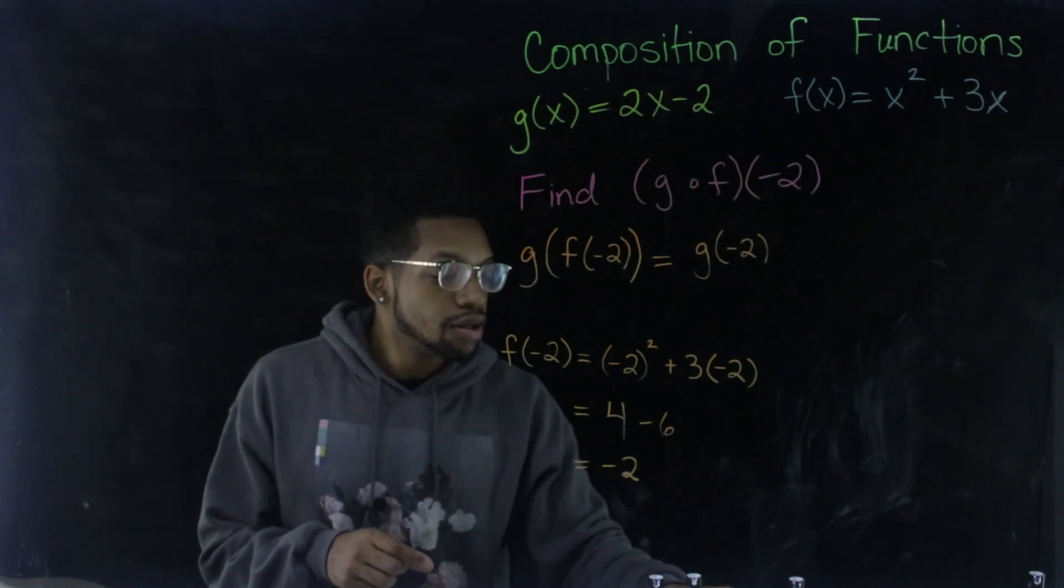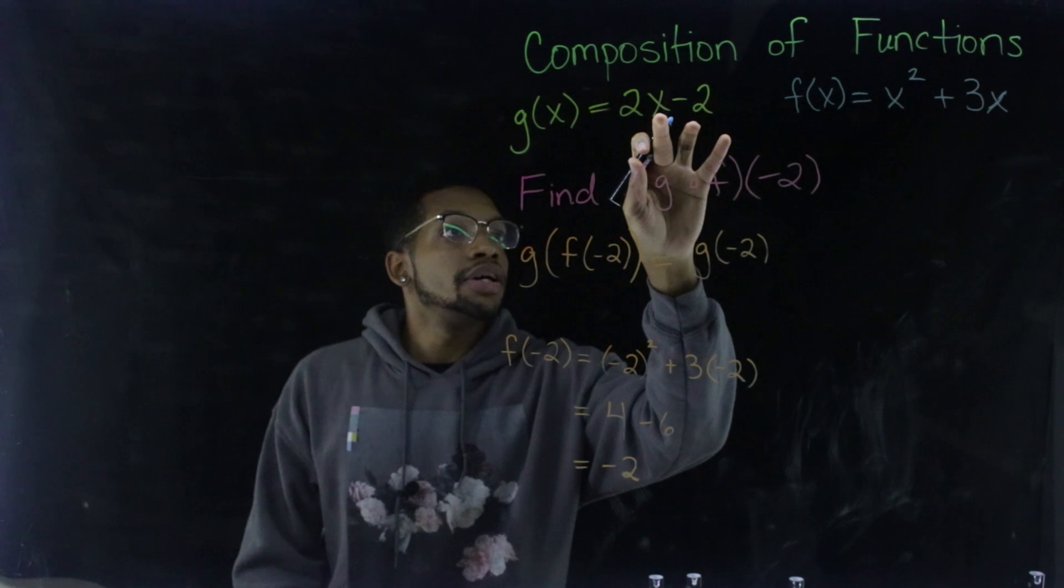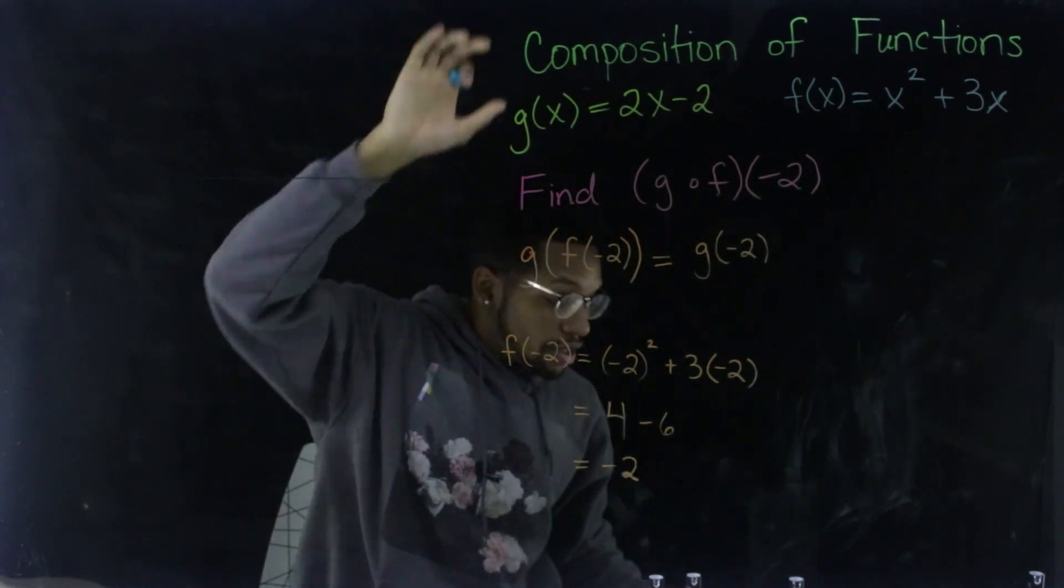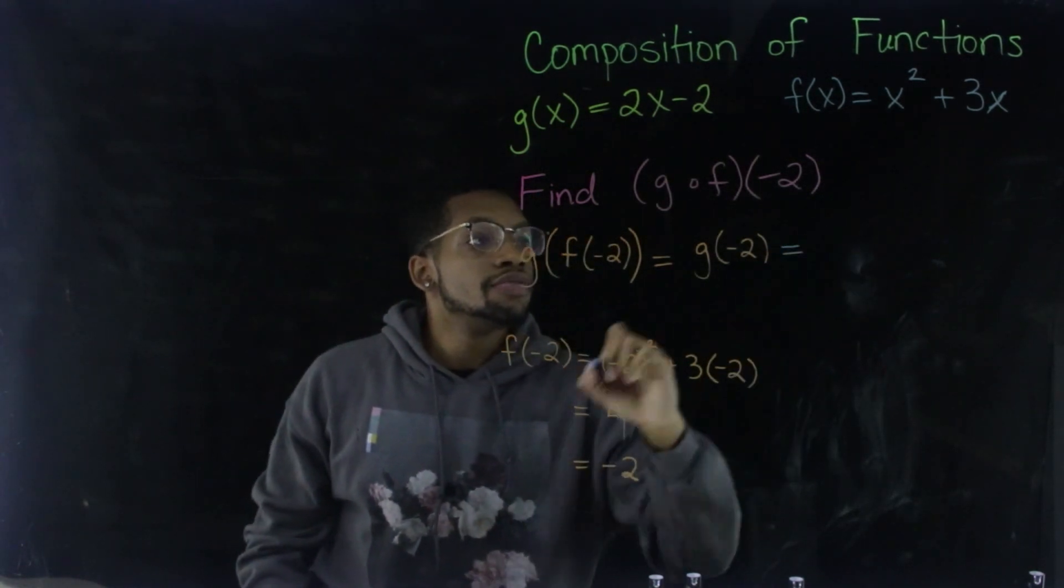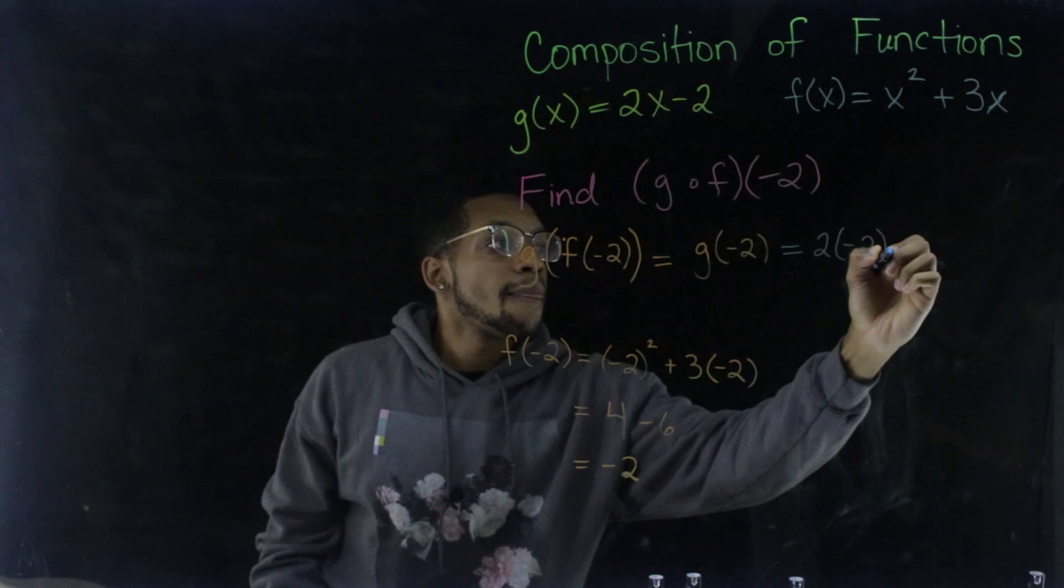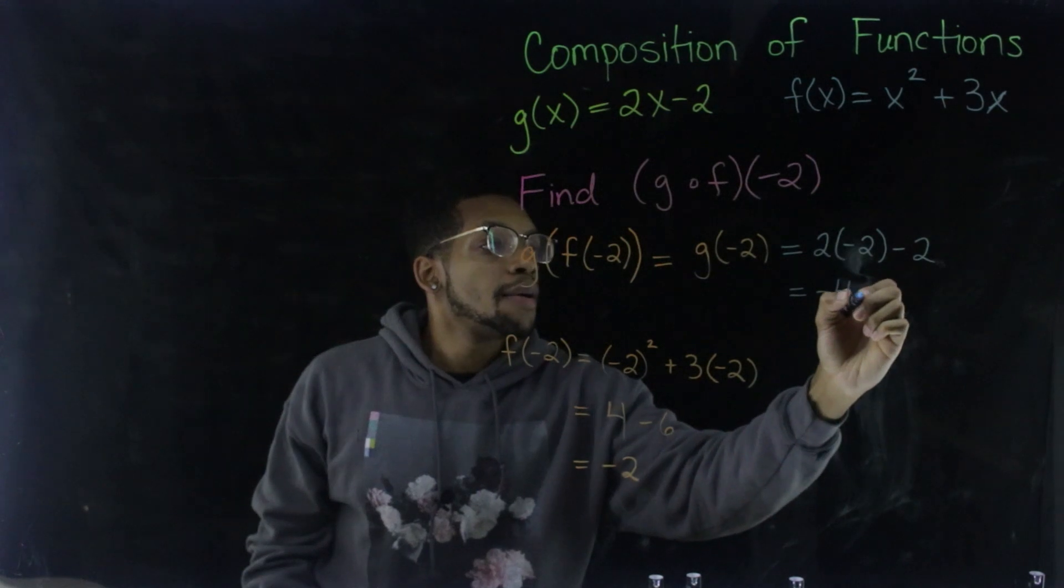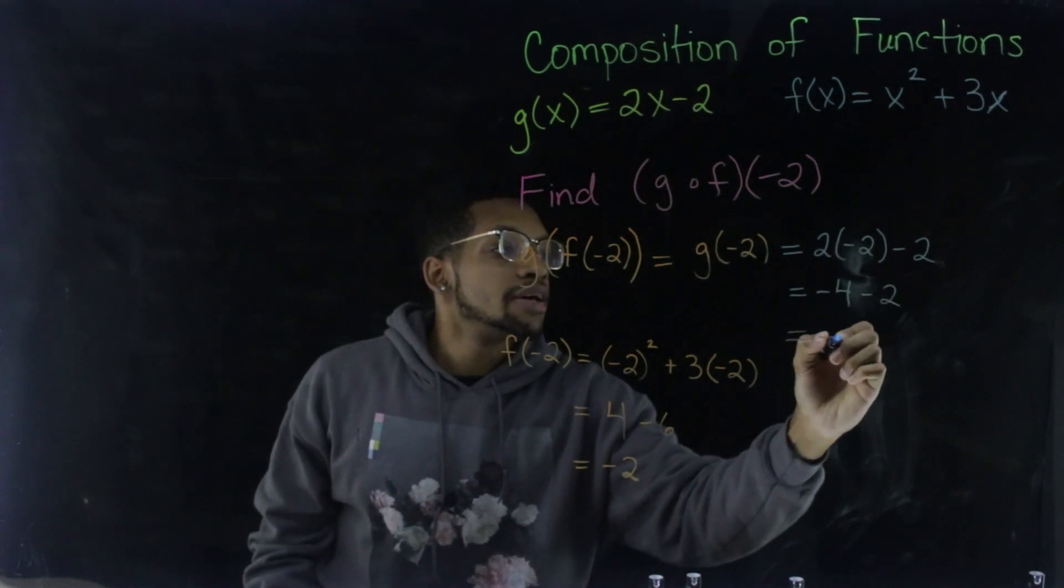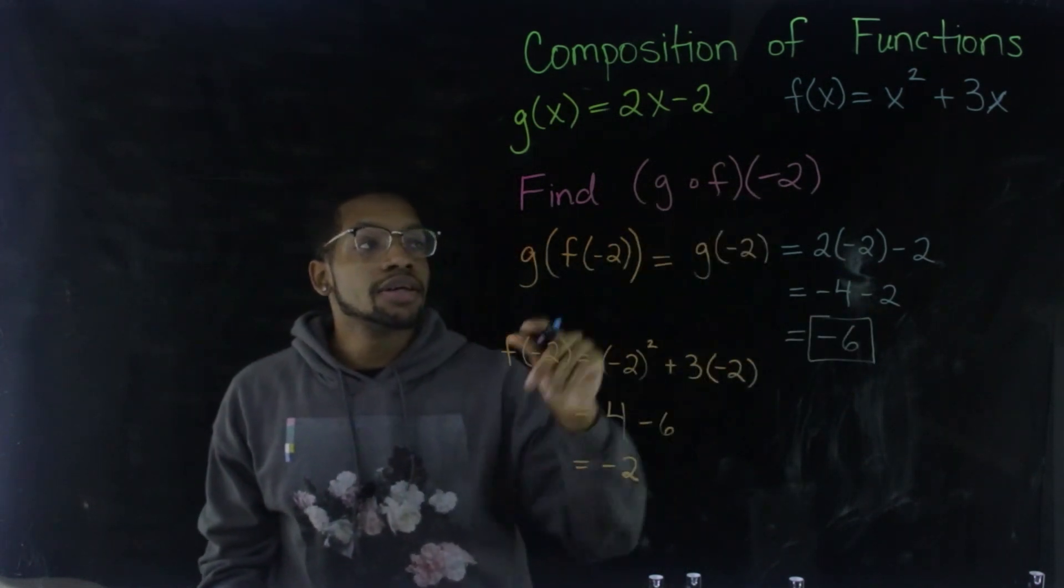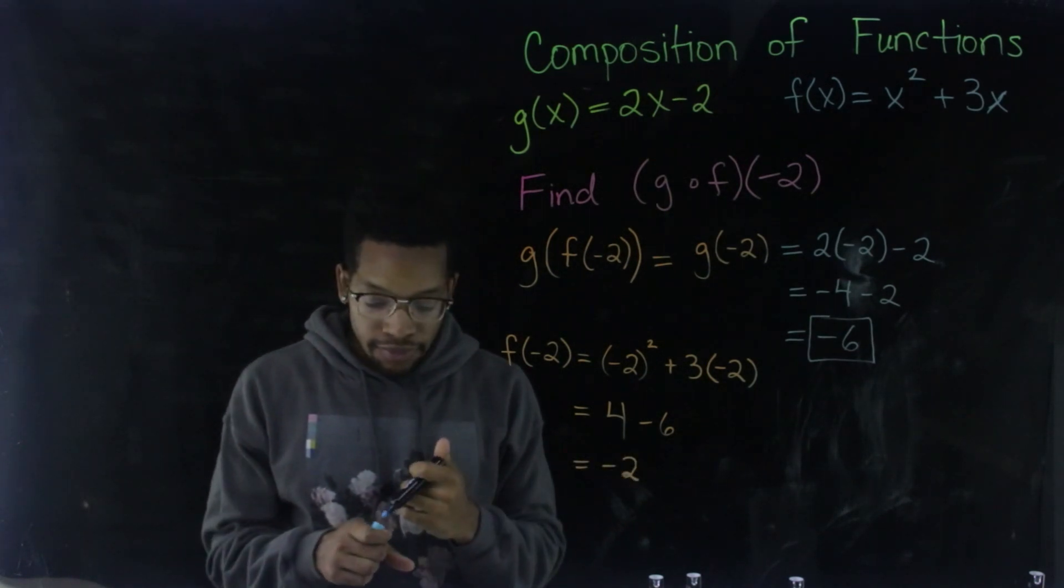So literally what they're asking us is now, what is G of negative two? Because as we just saw F of negative two gives us negative two, which is kind of confusing. It just happened to be like that, but all right. So now G of negative two, we're going to plug in negative two wherever we see an X. So actually, hold on. Let's rewind a little bit. I'm just going to write it equals. So G of negative two is just going to be two times negative two minus two. Wow. That is a lot of twos. My bad. All right. So two times negative two is negative four minus two is negative six is your final answer. So just because this isn't an X doesn't mean we can't do it. Same thing applies. We're just using a number in our first function and that's it.